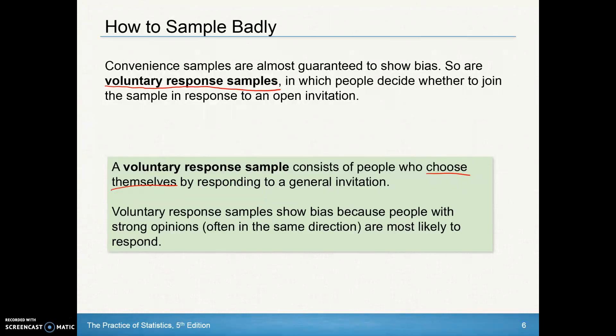Voluntary response samples show bias because people with strong opinions in the same direction are most likely to respond. So when you have those television call-in polls, only people that feel strongly are going to generally call in. So those results can be skewed in those directions.